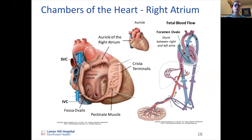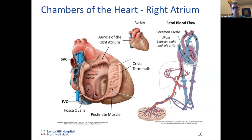The right side of the heart handles deoxygenated blood coming in from the body — this is venous blood. Deoxygenated blood goes to the right side of the heart, which then sends it to the lungs to get oxygenated, and that oxygenated blood returns to the left side of the heart, which then pumps it back out to provide oxygen for the rest of the body.